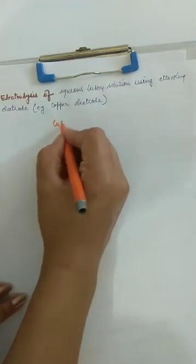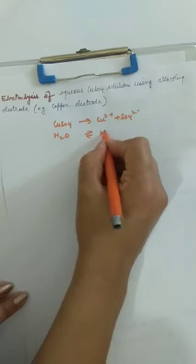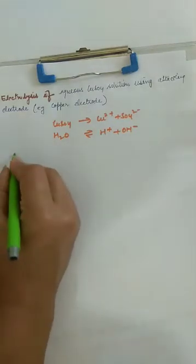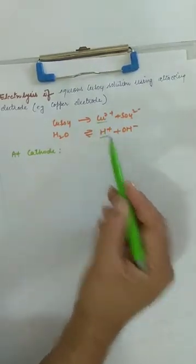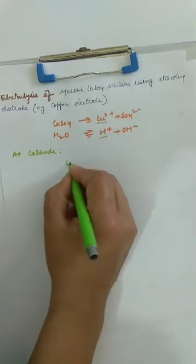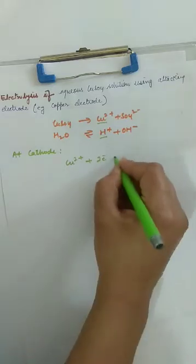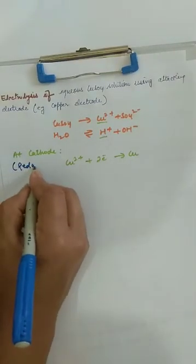Same as previously, we have the equation CuSO4, which will form Cu2+ plus sulfate, and water will ionize to give H+ plus OH-. Then the reaction at cathode: the positive ions — copper and H+ — both travel to cathode. Out of copper and H+, copper ion will be discharged. Cu2+ plus 2 electrons gives Cu, and this copper will be deposited at cathode — reduction takes place.